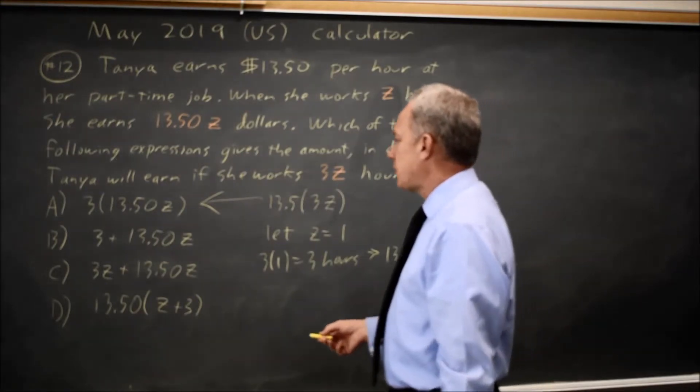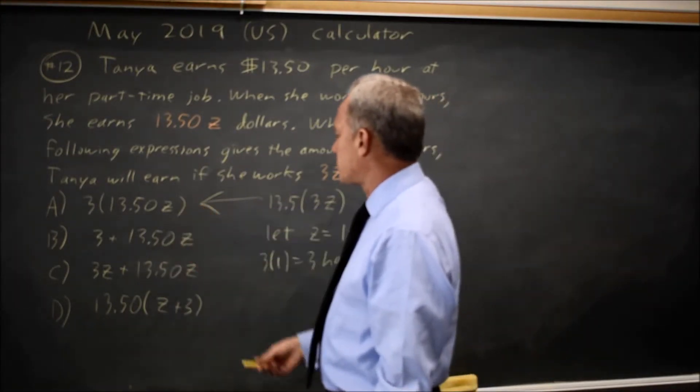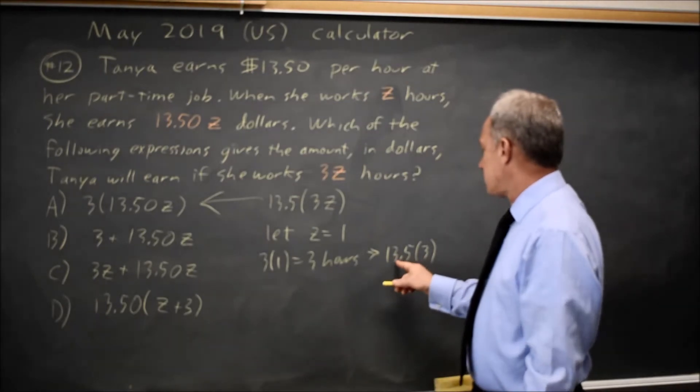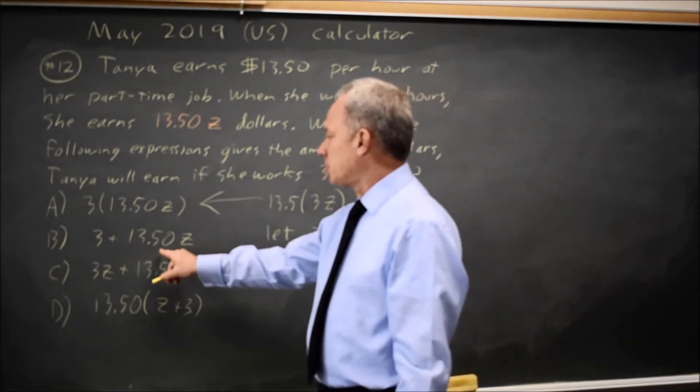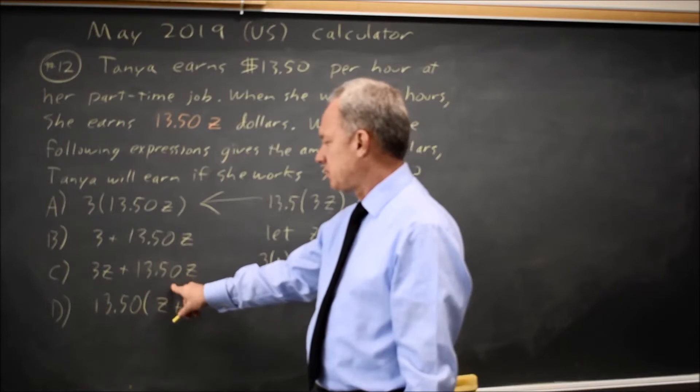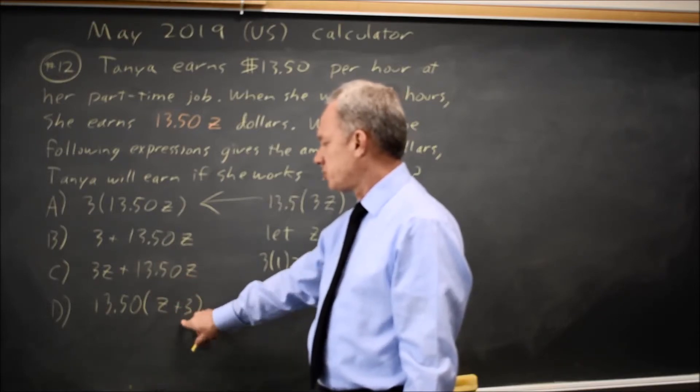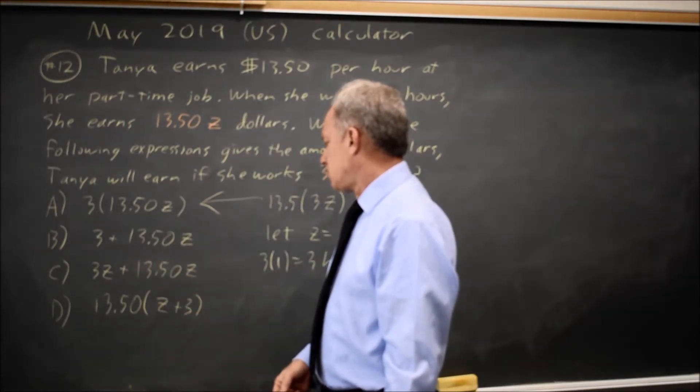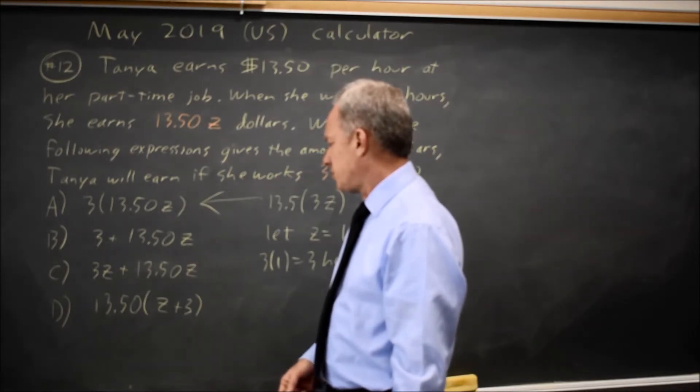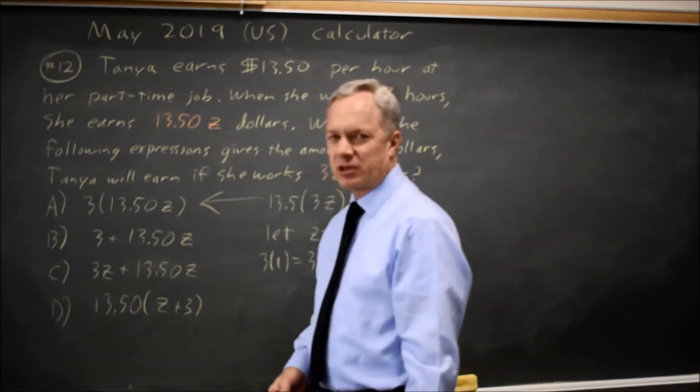And choice A gives you 13.5 times 3, which is 20.5. Choice B only gives you 16.5. Choice C, 16.5. And choice D, 4 times 13.5 would be 54.